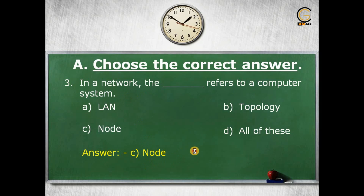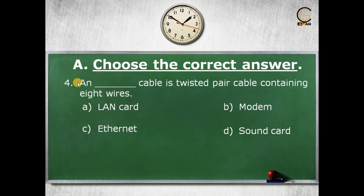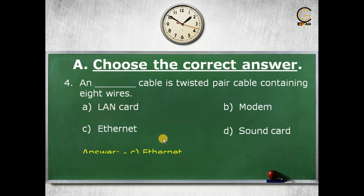Question number four: a dash cable is a twisted pair cable containing eight wires. The options are: a) LAN card, b) modem, c) ethernet, d) sound card. The correct answer is c) ethernet, as an ethernet cable is a twisted pair cable that contains eight wires.